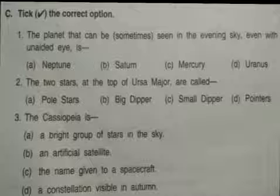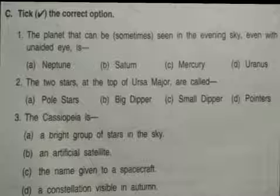Question C. Take the correct option. First: The planet that can be sometimes seen in the evening sky even with unaided eye is? Options are Neptune, Saturn, Mercury, Uranus. The correct answer is Mercury.